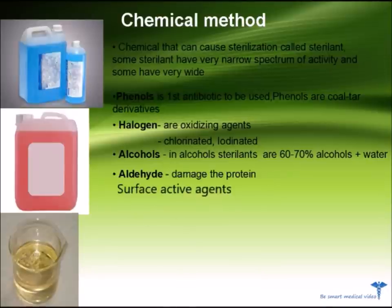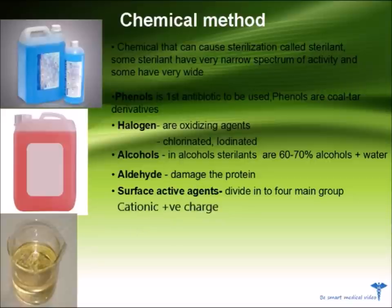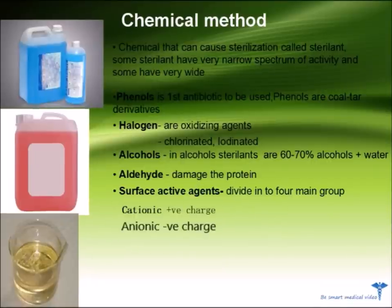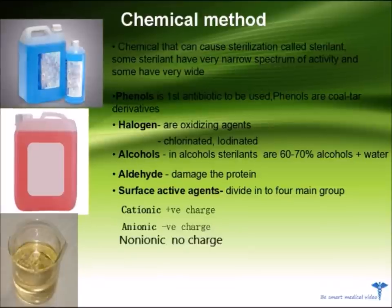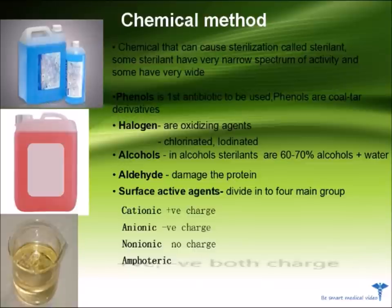Surface active agents. Surface active agents are divided into 4 main groups. Number 1, cationic — cationic has a positive charge. Number 2, anionic — anionic has a negative charge. Number 3, nonionic — nonionic has no charge. And number 4, amphoteric — amphoteric has both positive and negative charge.